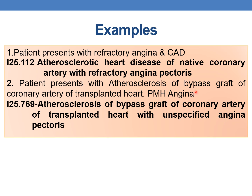Example 2: Patient presents with atherosclerosis of bypass graft of coronary artery of transplanted heart, with past medical history of angina (unspecified). Since angina is present and CAD is also present, use the combination code. The appropriate code is I25.769 — atherosclerosis of bypass graft of coronary artery of transplanted heart with unspecified angina pectoris.